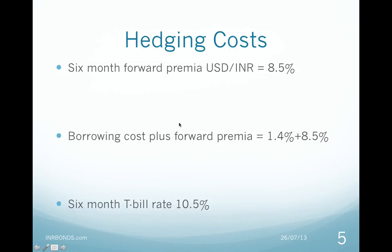So the total cost for the FII, which includes borrowing cost plus forward premium, is 1.4% plus 8.5%, which equals 9.9%. This is against the 6-month T-bill yield of 10.5%, which gives a total hedged spread of just 60 basis points.